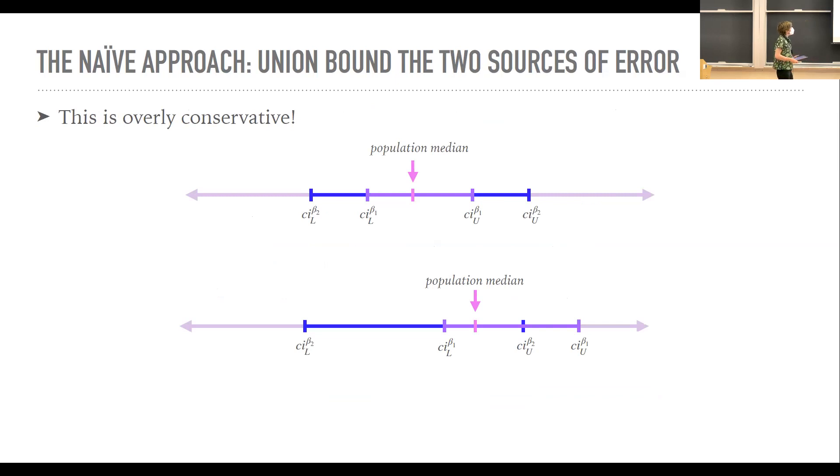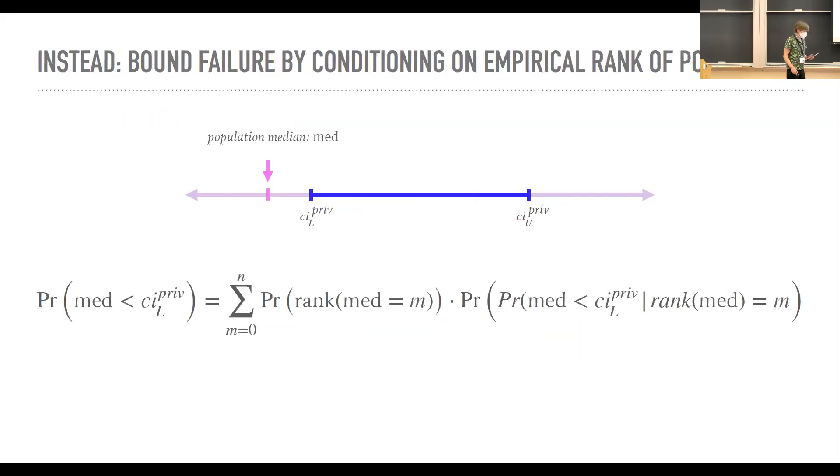And there's a reason for this. Because we don't actually need the non-private confidence interval to be inside of the private one in order for the private one to be a valid confidence interval. So in that first image, we do have that being the case. But in the second one, both the blue confidence interval, which is the private one, and the purple one, which is non-private, they both capture the population median, but they're not completely overlapping.